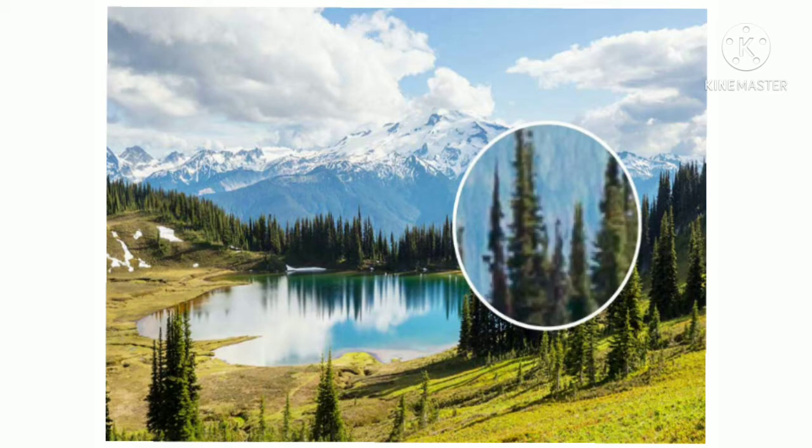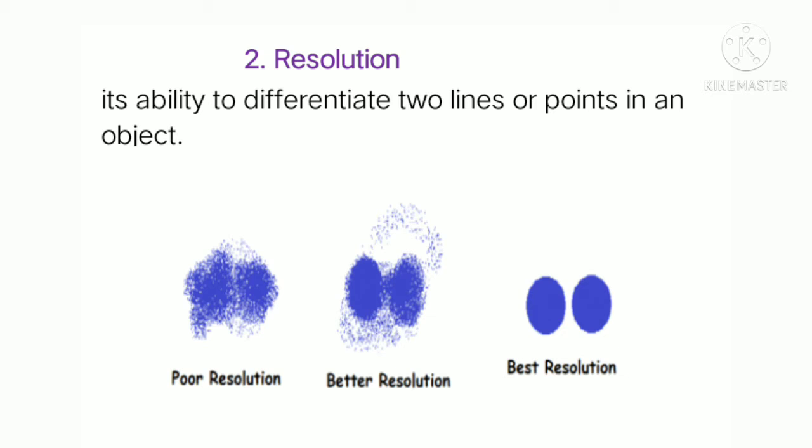On screen you can see a beautiful image of nature — as soon as I zoom in on the trees, it gets blurred. This brings us to the second important property of the microscope: resolution, which is equally important to magnification. Resolution means clarity of image or high quality image. The blurriness indicates poor resolution.